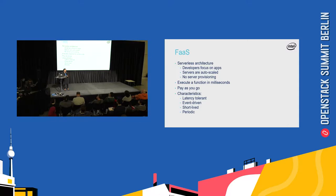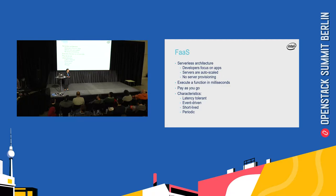The developer can just have the output. It really makes a developer's life easy. There is no server provisioning, servers are auto-scaled, and functions execute quite fast because the code is so granular — it's just a piece of code or a function. You just have to pay for the time you are running your functions on the cloud platform. Some key characteristics of FaaS are that it is latency tolerant, event-driven, short-lived, and periodic.